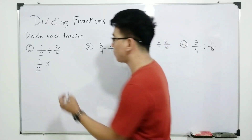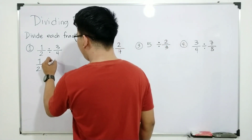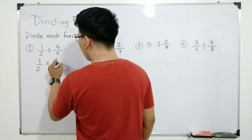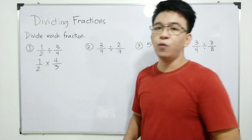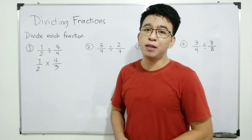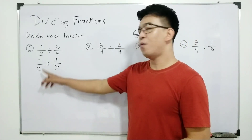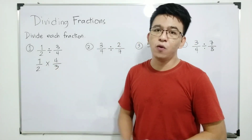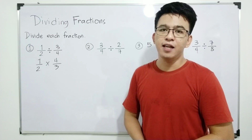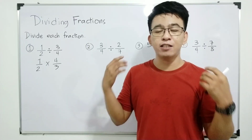The reciprocal of three over four is simply four over three. So right now we have one half times four over three.